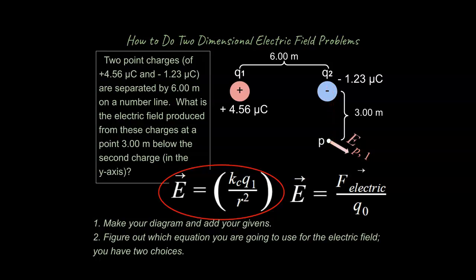Assuming a small positive test charge, is the electric field from Q2 going to be going up or down? The answer is up. If we assume a small positive test charge, it's going to be attracted to the negative charge of Q2 — so the electric field vector from Q2 points upward toward Q2.